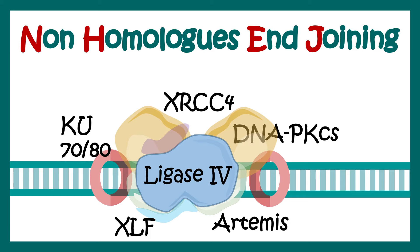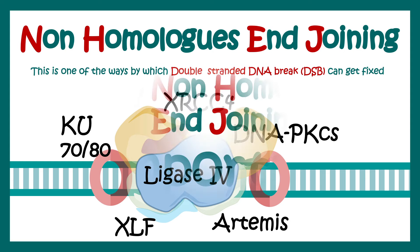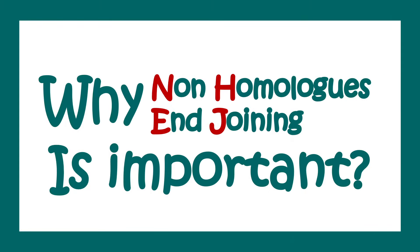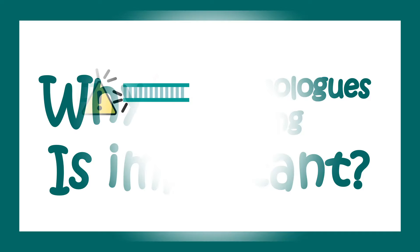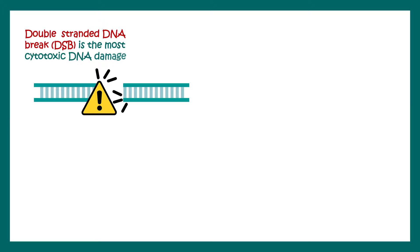In this video we'll talk about non-homologous end joining. This is a way by which double-stranded DNA breaks can be fixed. Let's learn why non-homologous end joining is really important for a cell.